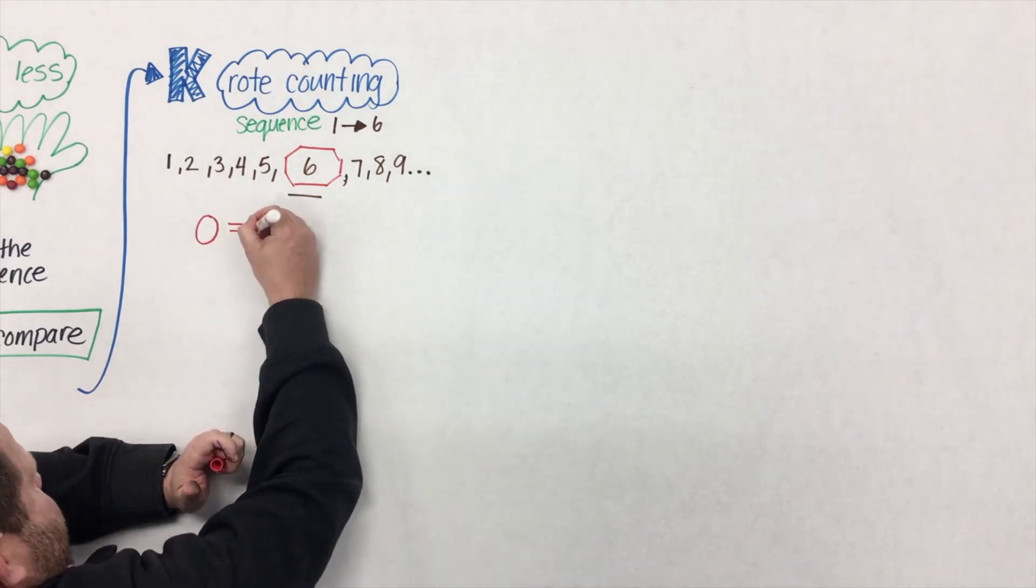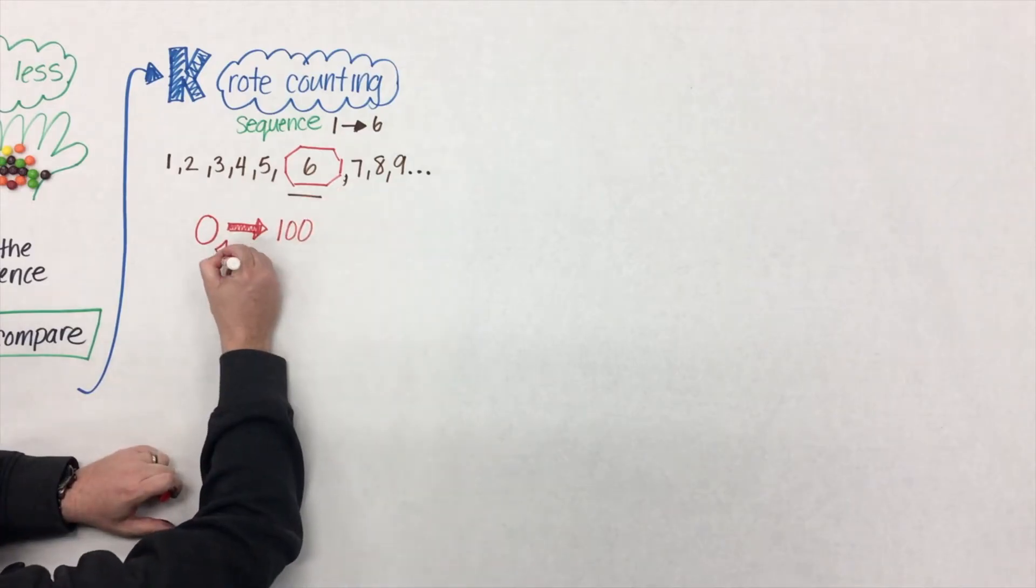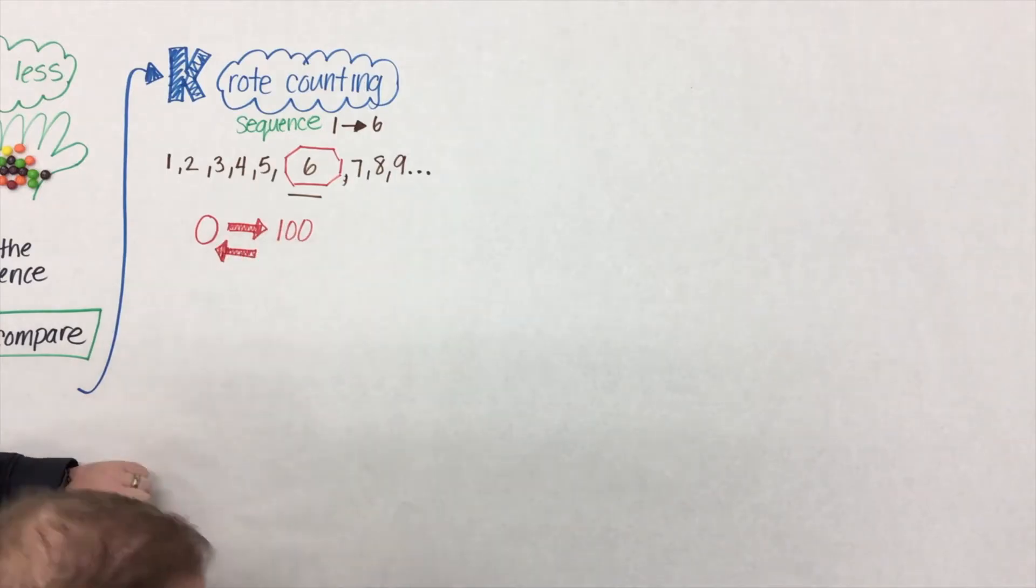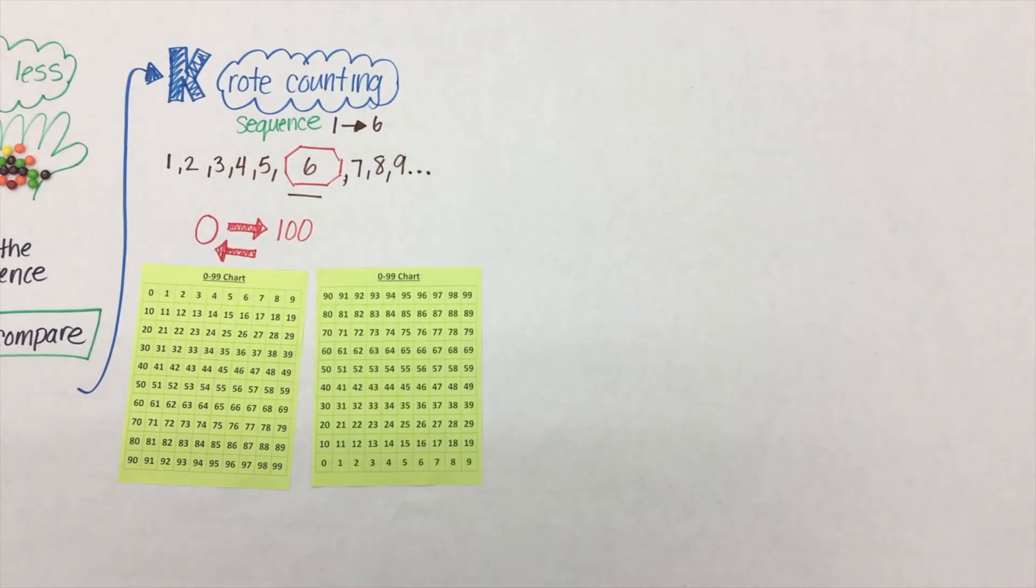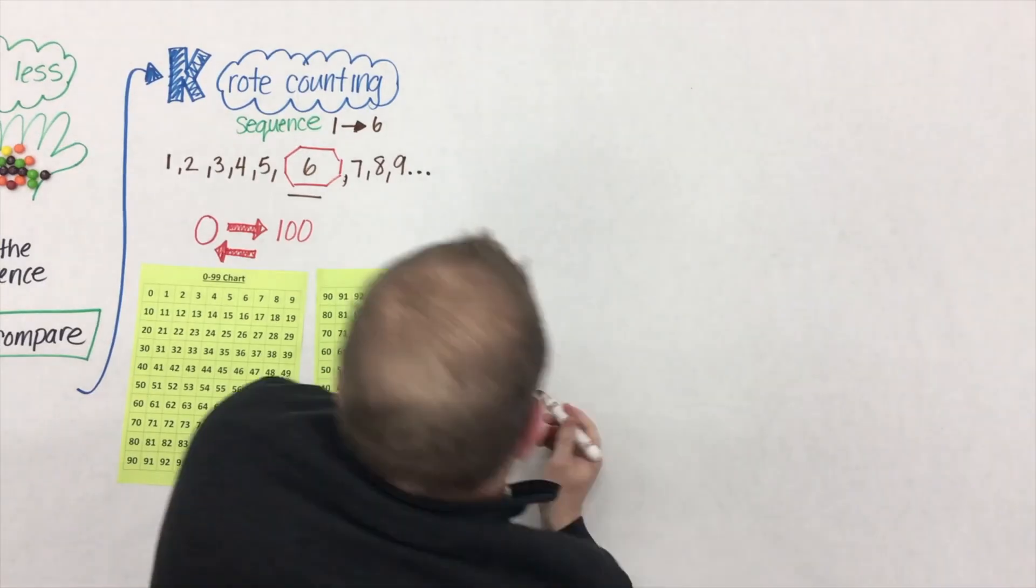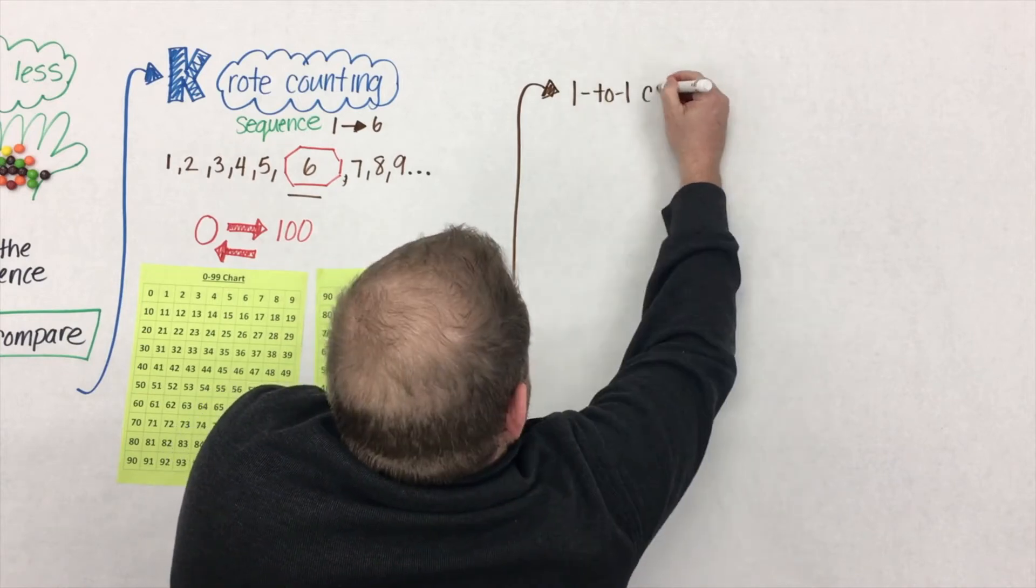In kindergarten, students should be working on that count sequence from 0 to 100, forwards and backwards. I think most students in kindergarten have had exposure to a hundreds chart or a 99 chart. But what about this one on the right? When the value increases, the numbers on the chart rise up. Now when we count up from 0, we don't go down, we actually go up. That might make more sense to kids. Something to think about.